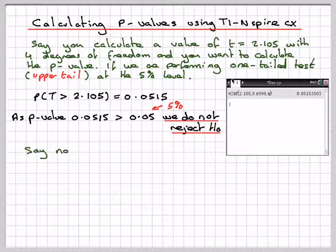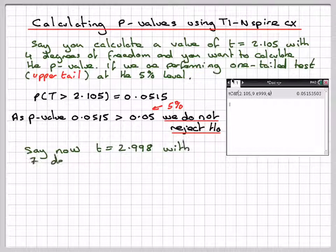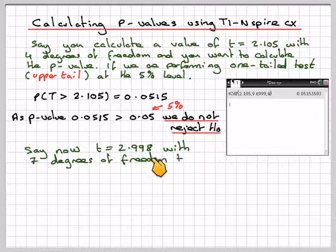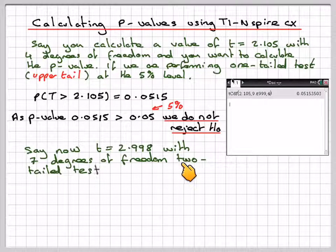Now say we have this situation: t = 2.998 with 7 degrees of freedom, and we want to do a two-tailed test at the 5% level.